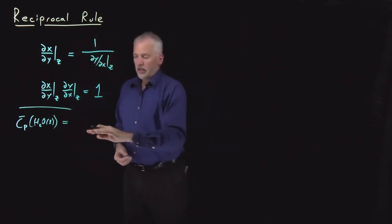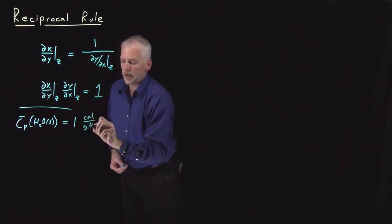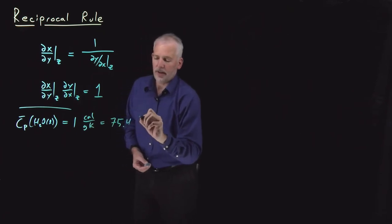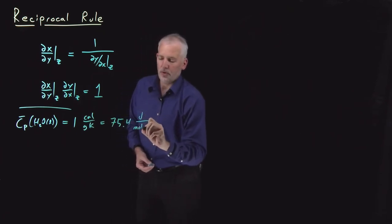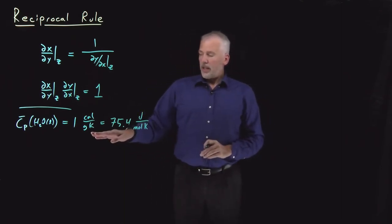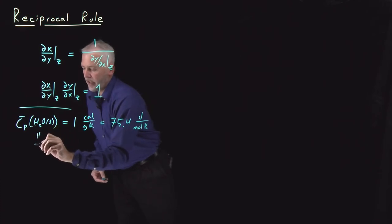In non-SI units, that's exactly 1 in units of calories per gram kelvin, or in SI units, that works out to be about 75 joules per mole kelvin. What that number literally means, because we know that the heat capacity is...